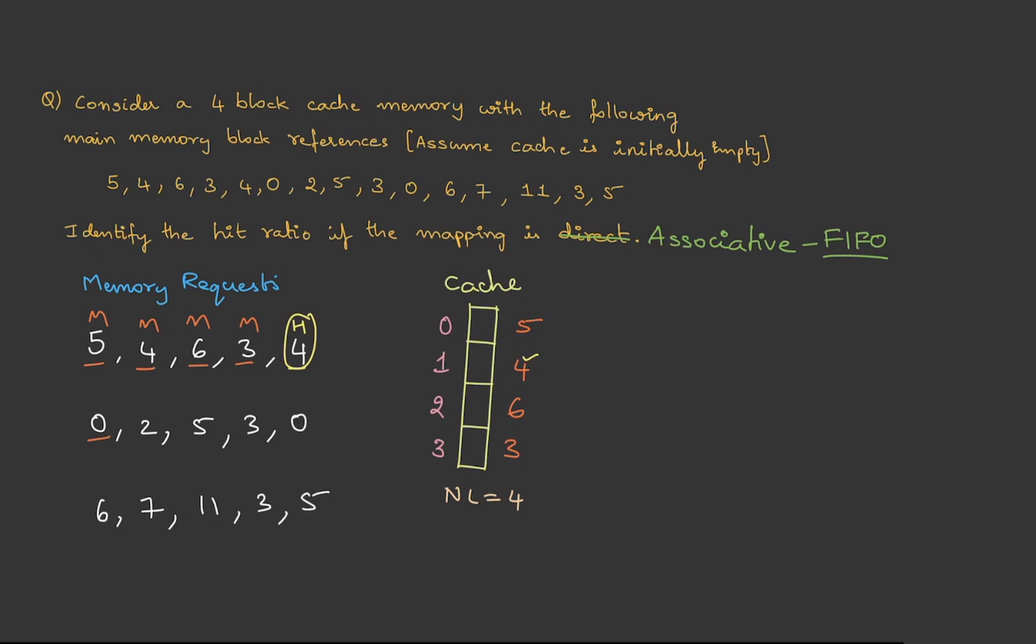Now 4 is available in the cache, therefore this is a hit. Then we have 0, which is not there. Therefore, we need to replace the one which was inserted first. And we already know it is 5, so remove this and replace with 0. So this is a miss.